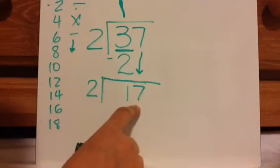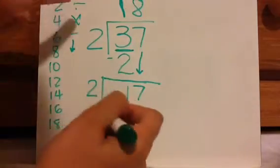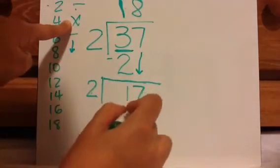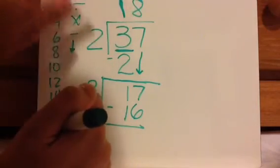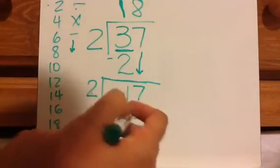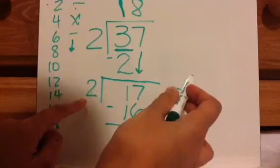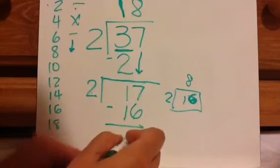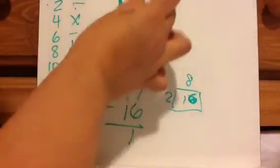Now you're going to do 2 goes into 17. I usually tell my scholars to think of this as a new division problem. So 2 goes into 17: 2, 4, 6, 8, 10, 12, 14, 16 — that's 8 times. So you're going to put the 8 up here. 8 times 2 equals 16. A lot of students will do 18 times 2 — don't do that. This 1 you're done using. It's 8 times 2 equals 16. Because you're saying the best I can do is an 8 by 2, and it'll be 16 in that array. So when you do 17 minus 16, you'll have 1 left over. And so it's 18 remainder 1.